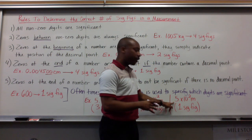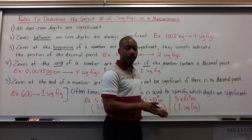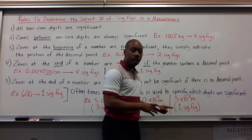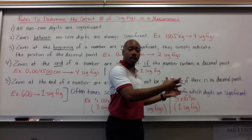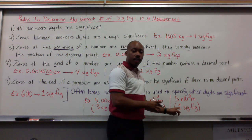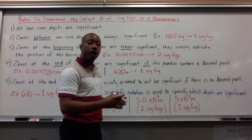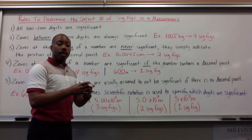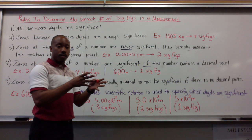Here, third example, I have 5 times 10 to the second meters. I have one significant figure here because this is my only non-zero digit. The number is still 500 meters, but I've expressed it differently because it only has one significant figure.